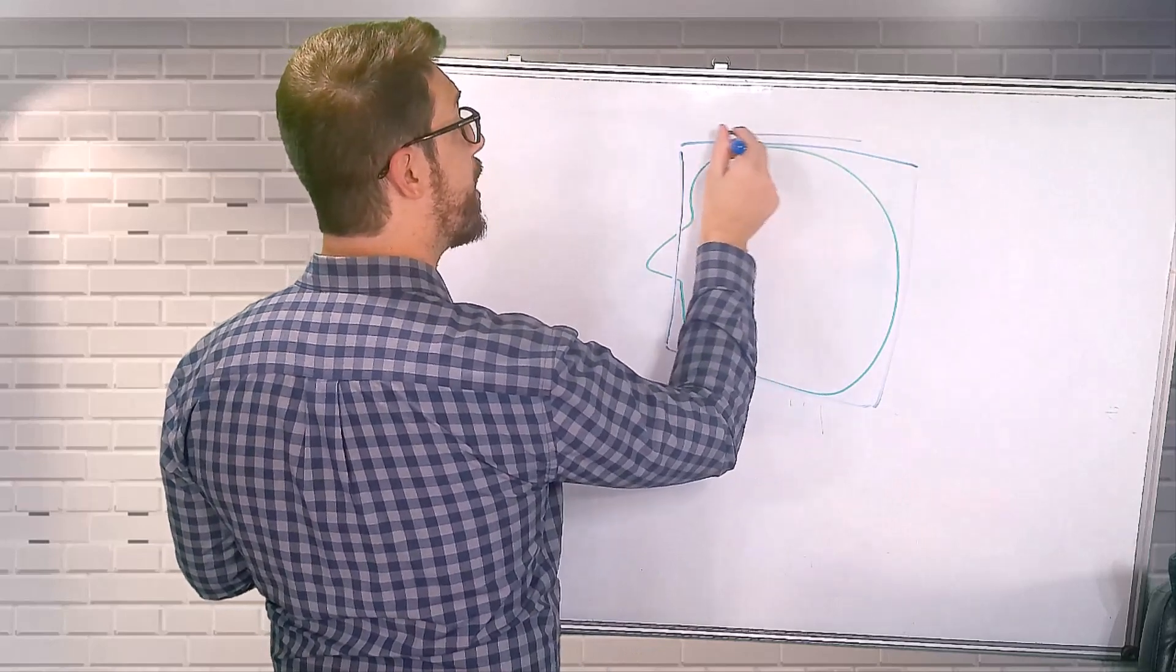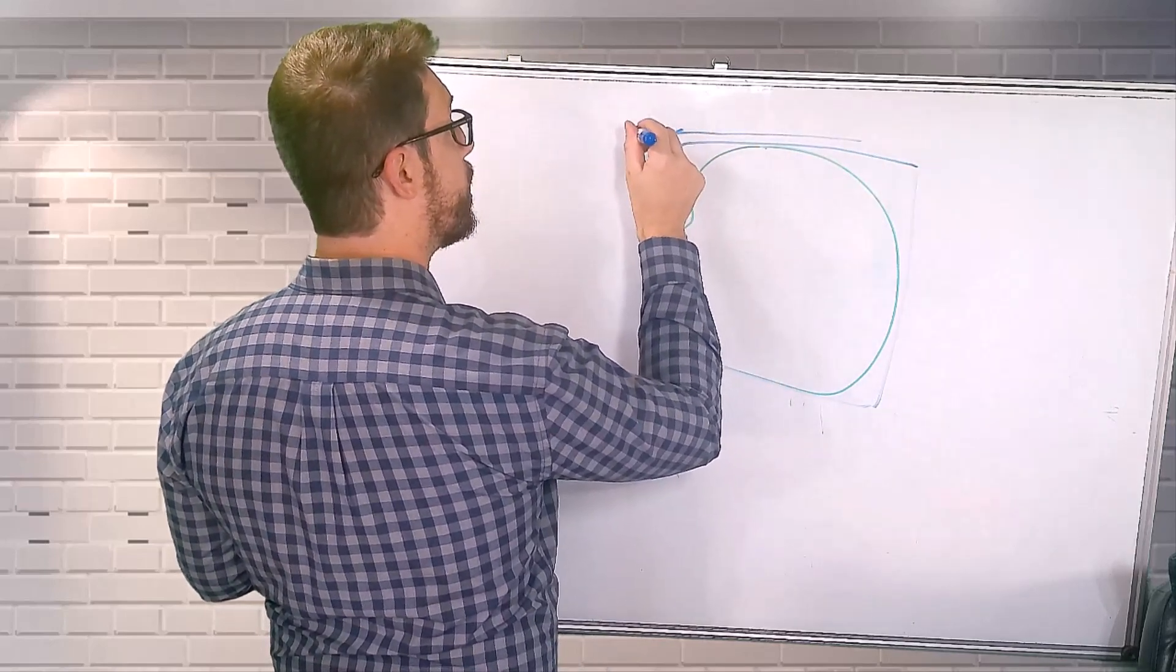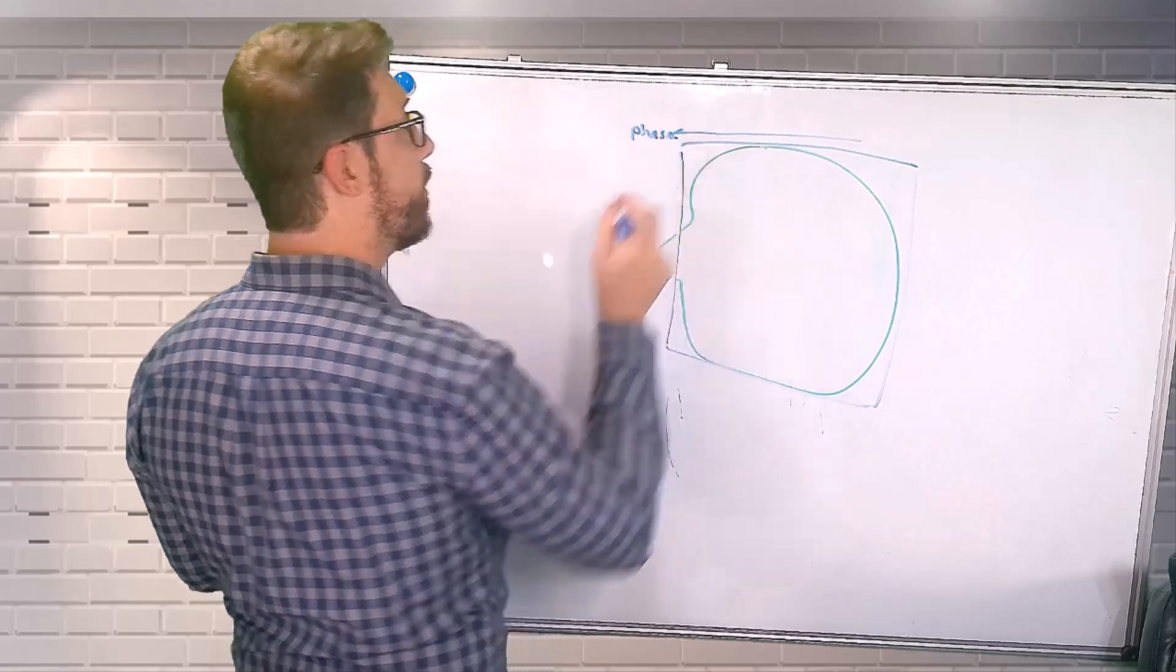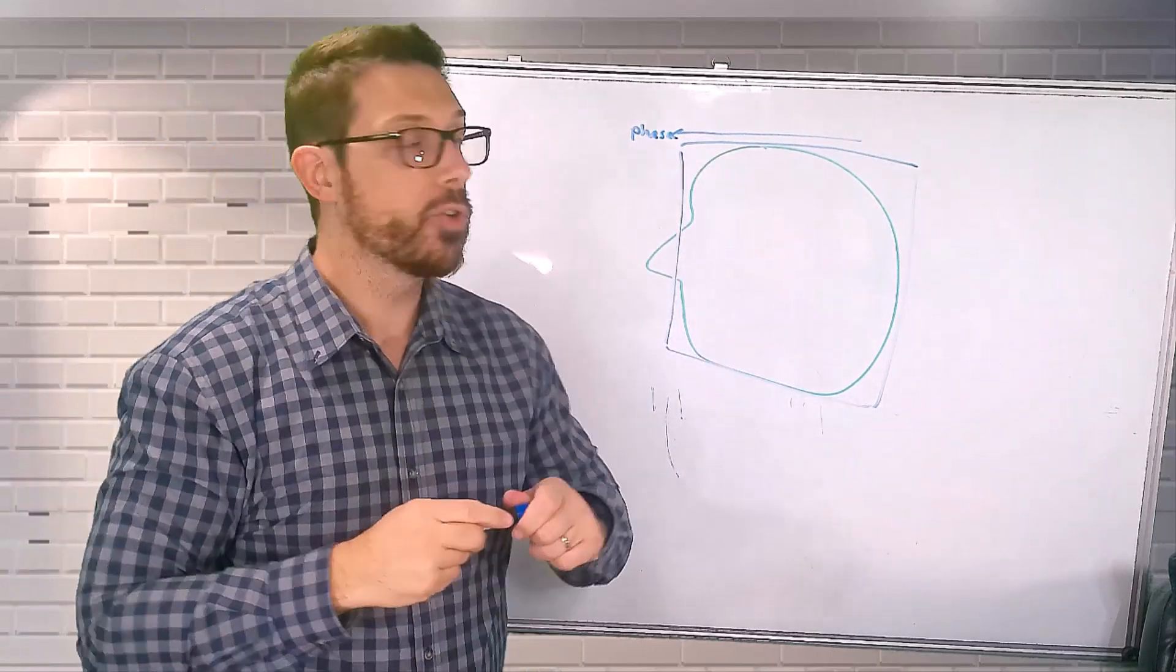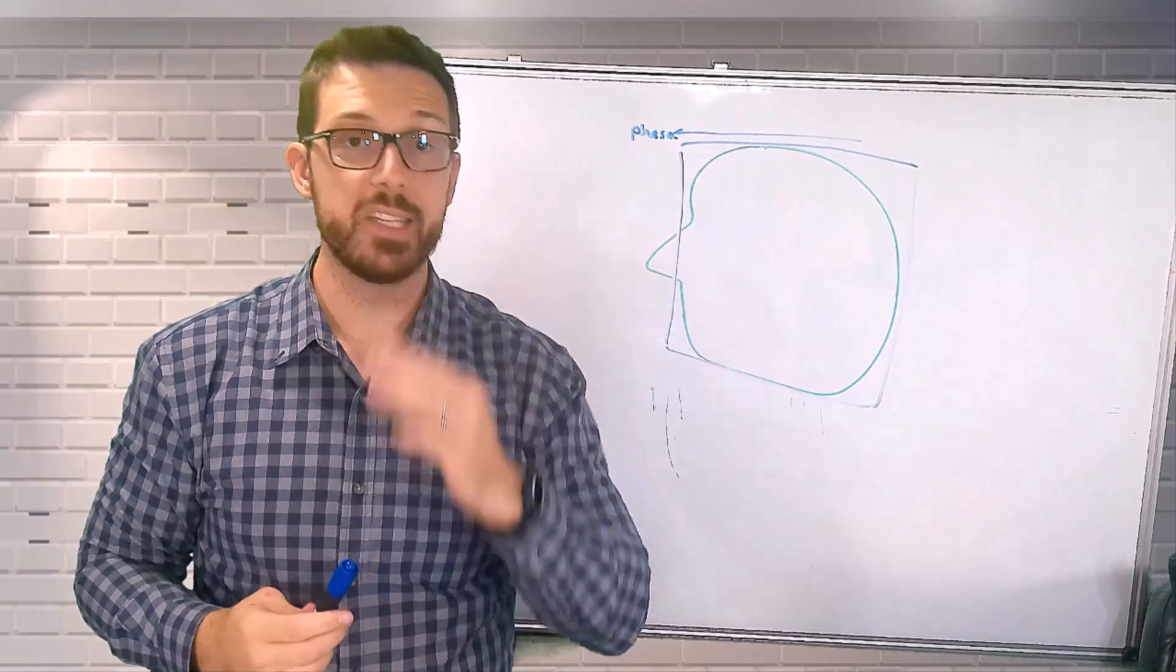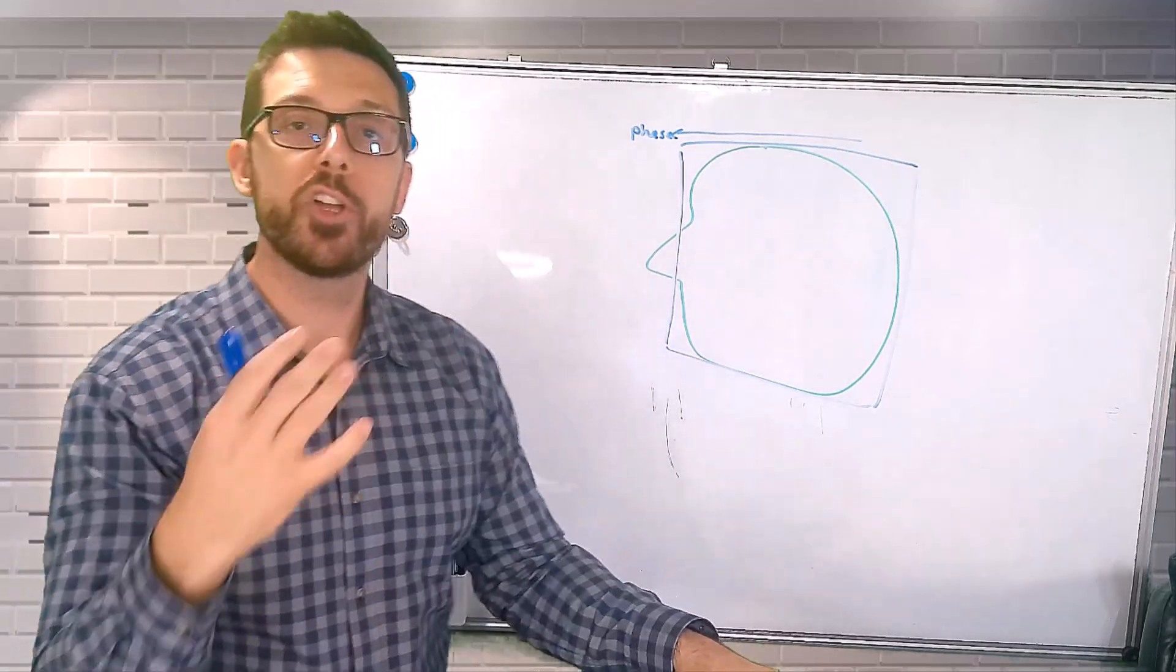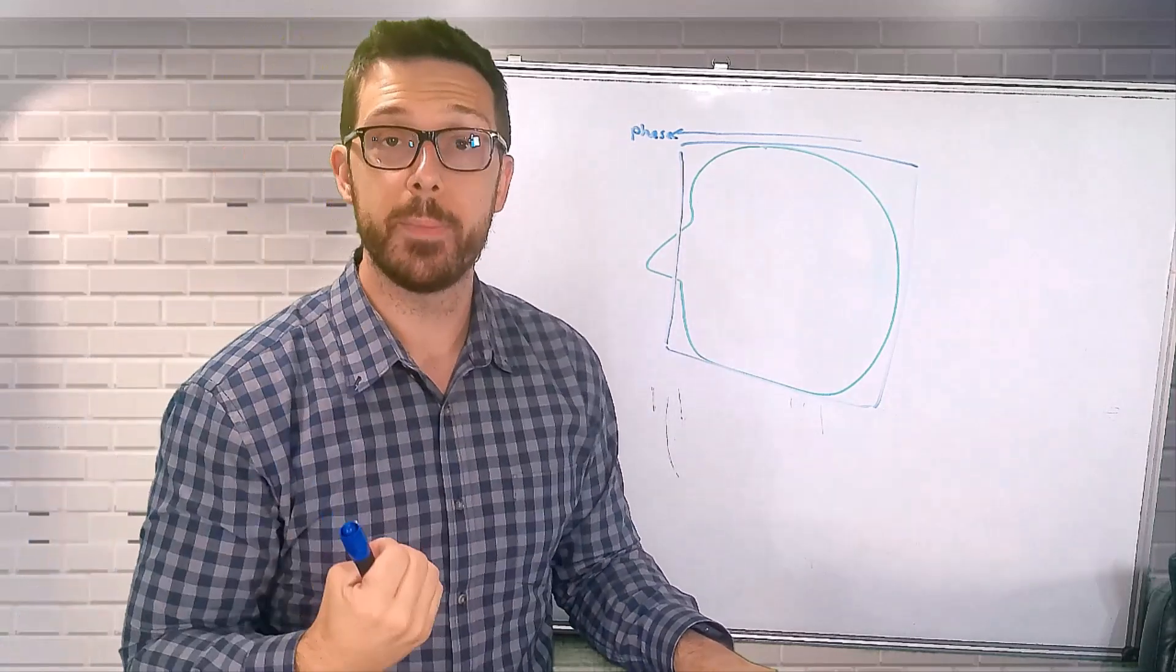I've got a phase encoding direction. So we've got a phase encoding direction going across our image in this fashion. And now my goal is to go ahead and encode this image.